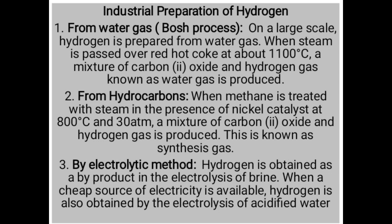The last industrial method is the electrolytic method, which involves electricity. Hydrogen is obtained as a byproduct in the electrolysis of brine. When a cheap source of electricity is available, hydrogen is also obtained by the electrolysis of acidified water. Once you pass electricity through brine, hydrogen gas will be produced — we call it electrolysis of brine.